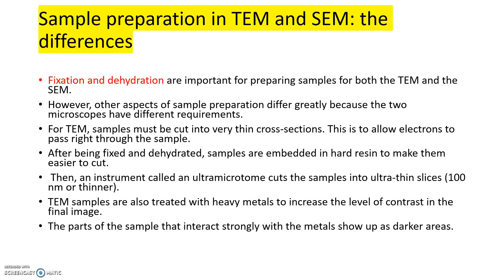In sample preparation, the main differences between TEM and SEM are fixation and dehydration, which are important for both. Other aspects of sample preparation differ greatly because the two microscopes have different requirements. For TEM, the samples must be cut into very thin cross-sections to allow electrons to pass right through. After being fixed and dehydrated, samples are embedded in a hard resin to make them easier to cut. An instrument called an ultra-microtome is then used to cut the samples into ultra-thin slices of 100 nanometers or thinner.